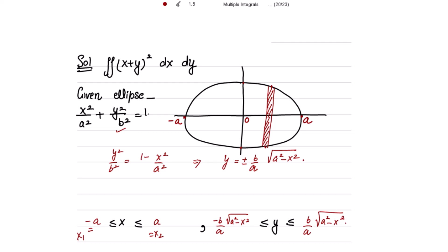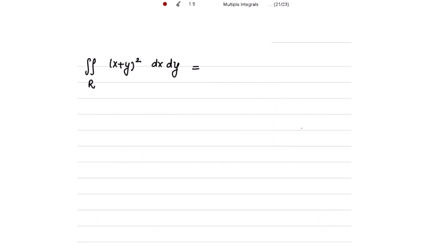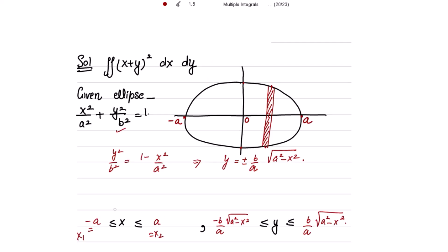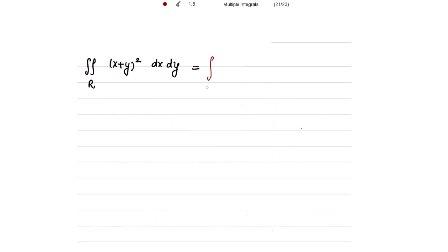To evaluate this double integral, because x₁ and x₂ are constants, we write the outer integral from -a to a with dx outside and dy inside. The limits of y on the inner integral are -(b/a)√(a² - x²) as the lower limit and (b/a)√(a² - x²) as the upper limit. The integrand is (x + y)².